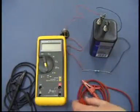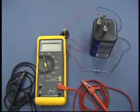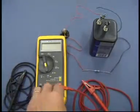Then place the red lead into the red resistance socket and the black lead into the black common socket.